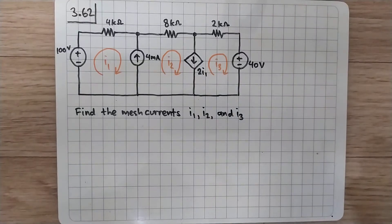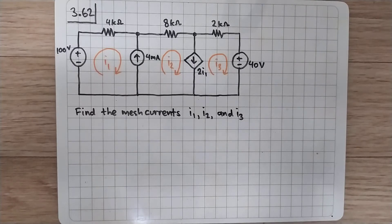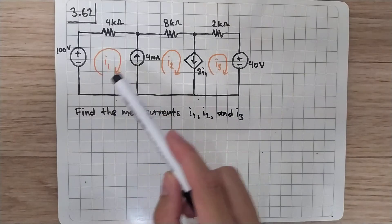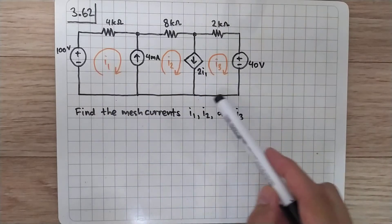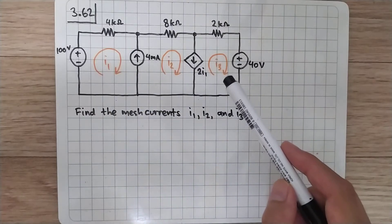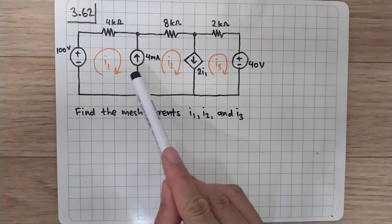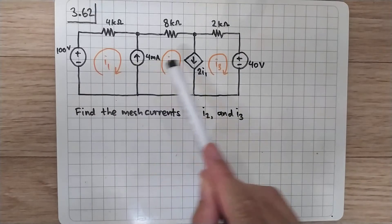We are going to solve problem 3.62 from Sadiku's book. The question is to find the mesh currents i1, i2, and i3. We have a problem here because there are two current sources in this circuit.